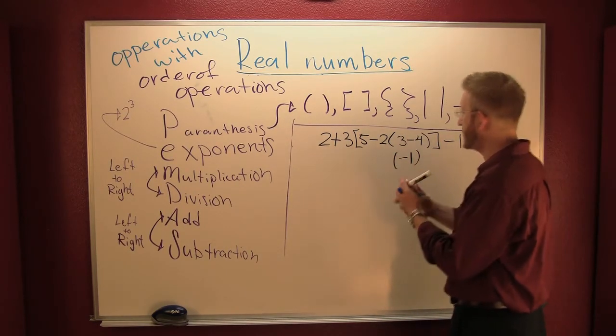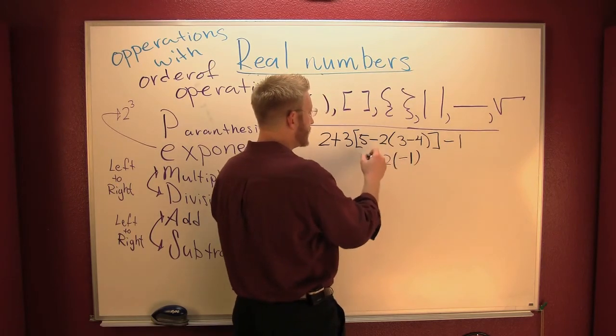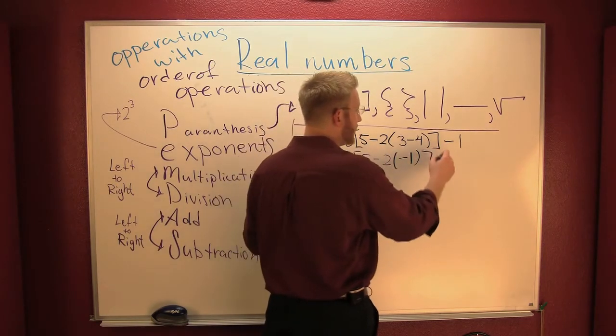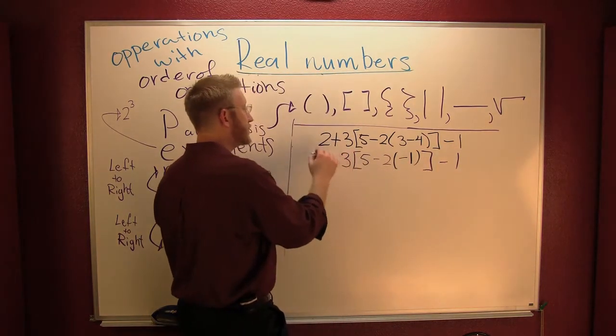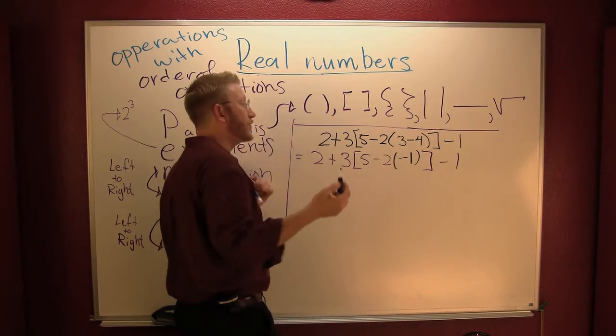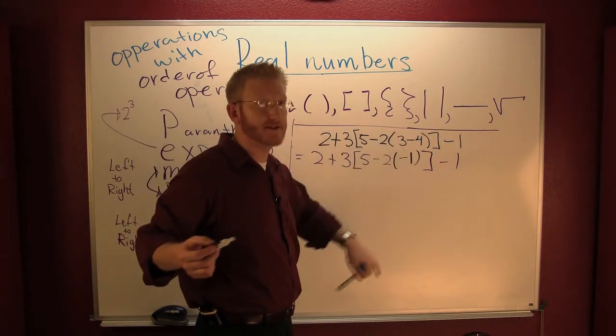Then I bring everything else on down. Looks like I got a minus two right there. There's your five. Those are still in these brackets. Now I still have a minus one over there, a three on the outside of that, and I'm still adding two. I only changed one thing from line to line, and that was inside those parentheses.